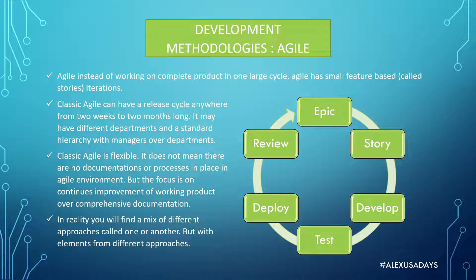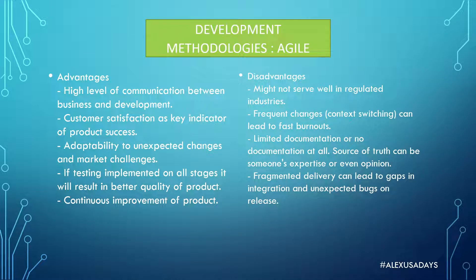In reality, you will find a mix of different approaches called one name or another but with elements from other approaches. You can actually see some mix of Waterfall practices and Agile. Different teams may be using different approaches — everyone might say they use Scrum or Agile, but each team has something else going on. From company to company, project to project, you will see differences. Agile, Waterfall, Scrum — they might have the same name but it's normally just a mix of things.